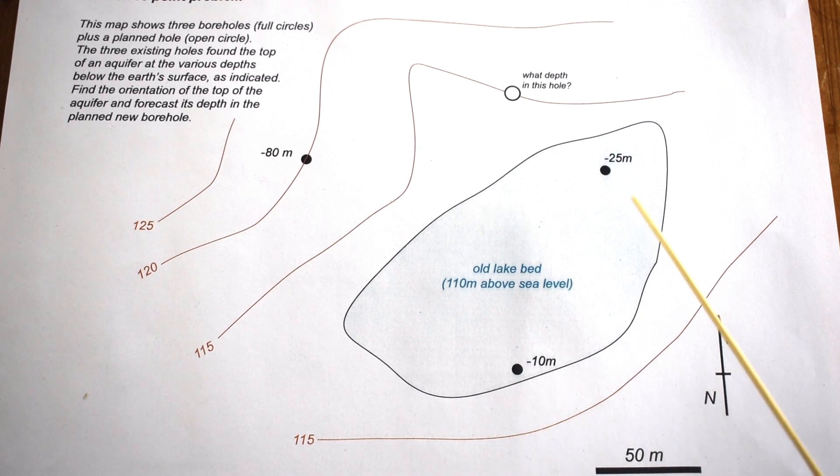Within this landscape there are three existing boreholes shown by these black circles, and the depth below the surface that these boreholes encounter an aquifer is labeled. This borehole encountered the aquifer 25 meters below the landscape, here the aquifer was just 10 meters below, and here it was 80 meters below. The first thing we need to do is convert these depths below the landscape to the elevation of the aquifer above sea level by simply subtracting this depth from the elevation of the borehole surface. In this case, we go down 80 meters from 120, so the aquifer is 40 meters above sea level.